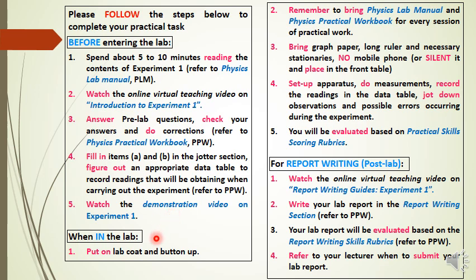When you are in the lab: Step 1, put on your lab coat and button up. Step 2, remember to bring your physics lab manual and physics practical workbook for every session. Step 3, bring graph paper, long ruler, and necessary stationery; no mobile phone, or silence it and place it on the front table. Step 4, set up apparatus, do measurements, record the readings in the data table, and jot down observations and possible errors occurring during the experiment. Step 5, you will be evaluated based on the practical skill scoring rubrics available in the physics practical workbook.